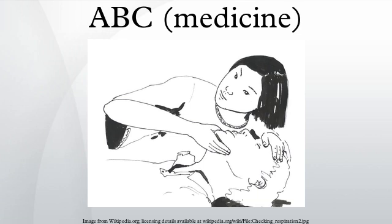In the conscious patient, other signs of airway obstruction that may be considered by the rescuer include paradoxical chest movements, use of accessory muscles for breathing, tracheal deviation, noisy air entry or exit, and cyanosis.